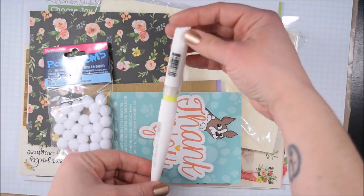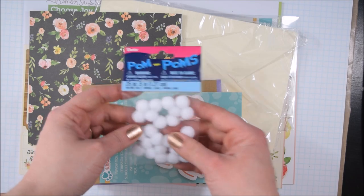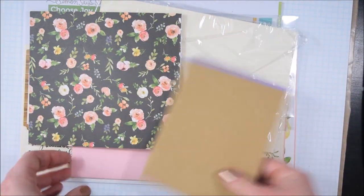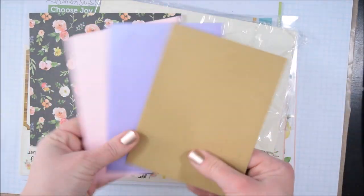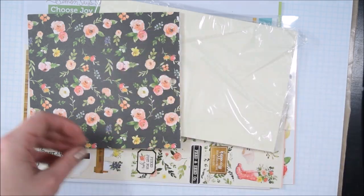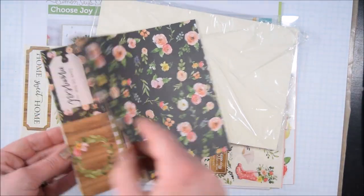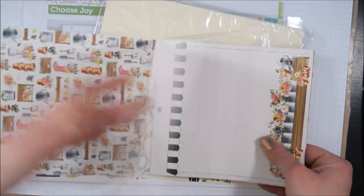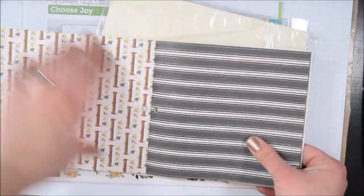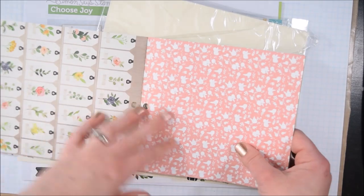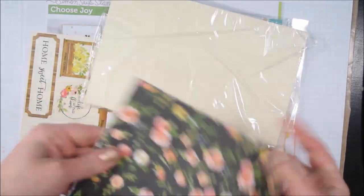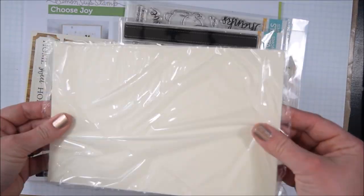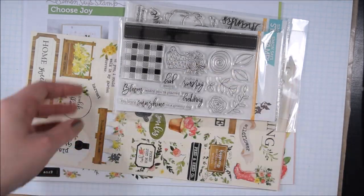I'm showing the contents of the kit here. It's the kit called Choose Joy and it includes the Simon Says Stamp Choose Joy clear stamp set, the Showers and Flowers clear stamp set, Hollyhock mini hybrid ink, Wisteria mini hybrid ink, Darice white pom-poms, 12 double-sided sheets of Cartabella Spring Market 6x6 paper, 2 Cartabella Spring Market sticker sheets.